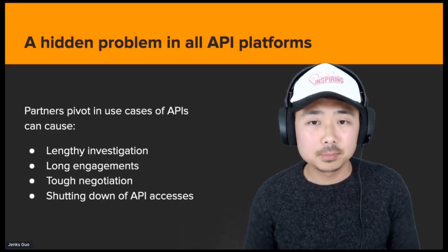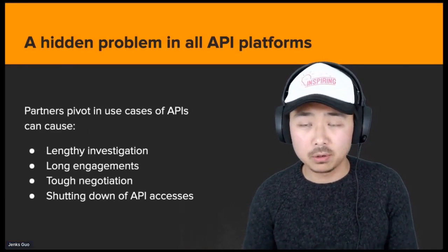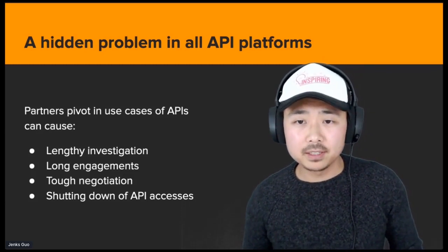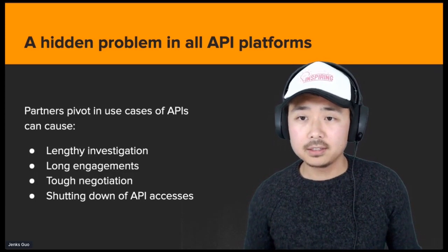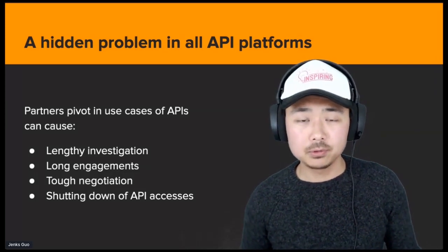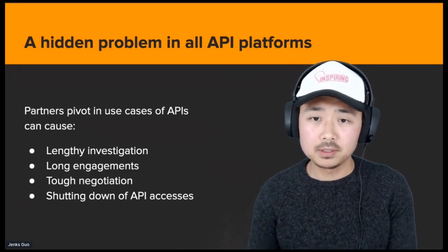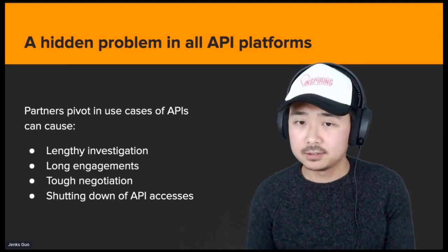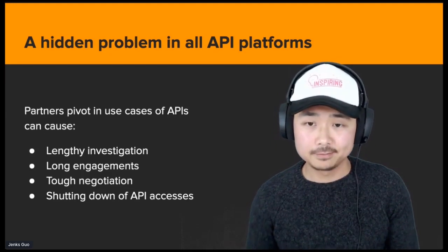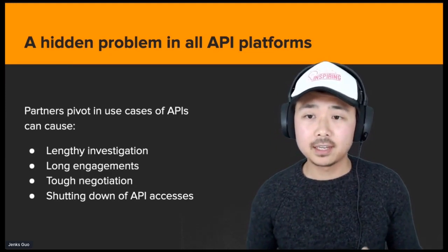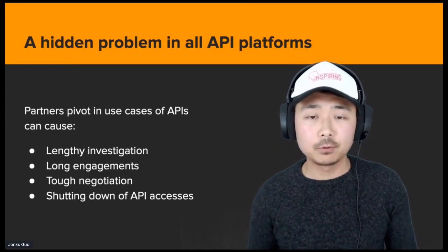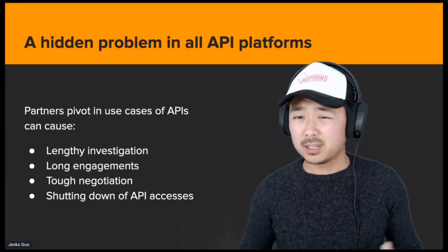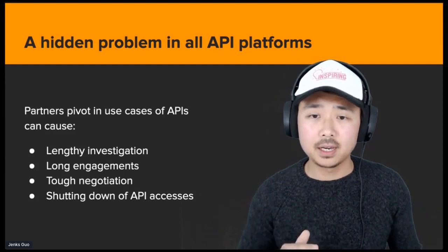Now, this exposes a problem, a hidden problem in all API platforms. Someone can completely pivot the use case of your API than they have originally proposed to your platform. In my experience, some of these pivots can cause problems when it is problematic and term breaking. It can cause lengthy investigation, long engagement back and forth with a partner. Sometimes tough negotiation is involved and potentially lead to shutting down of the API access.